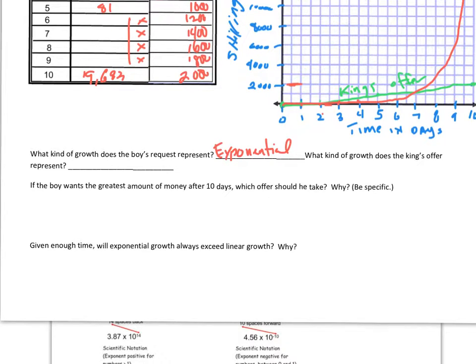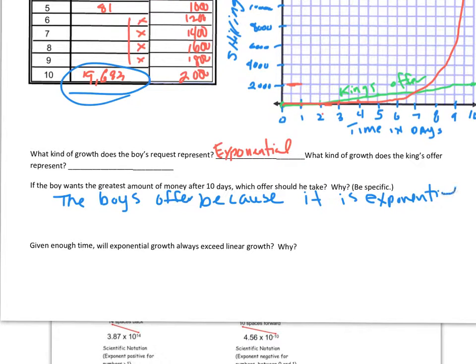If the boy wants the greatest amount of money, I know you know the answer to this one, because we're all acutely aware when there's money involved. It's obviously the boy's offer. And the reason you want the boy's offer is it's exponential. So you put something like the boy's offer because it is exponential and will grow faster and faster.